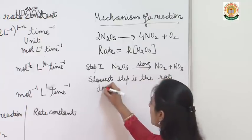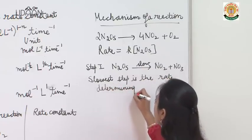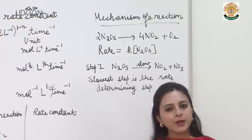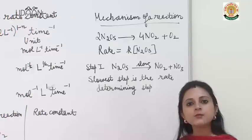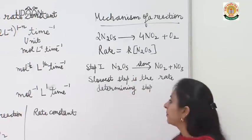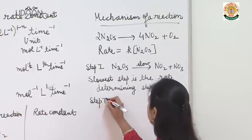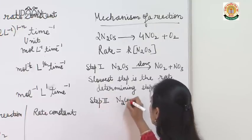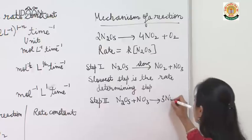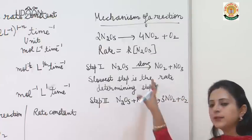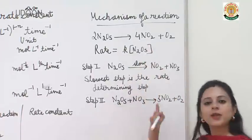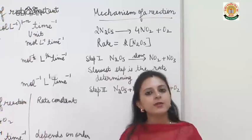When we write the rate law, we consider only the slowest step. Since rate depends only on N₂O₅ concentration, the first step involves only N₂O₅ reacting. Step 2: the other mole of N₂O₅ reacts with NO₃ to give 3NO₂ + O₂. When you add these two equations you get the overall equation, indicating this reaction takes place in two steps.